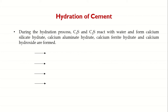These four Bogue compounds react with water to form different hydrates. The products are: calcium silicate hydrate (CSH), formed by the reaction of C3S and C2S with water; calcium aluminate hydrate (CAH), formed when C3A reacts with water; calcium ferrite hydrate (CFH), formed when C4AF reacts with water; and calcium hydroxide, which is an additional product of hydration. So there are four products of hydration in total.